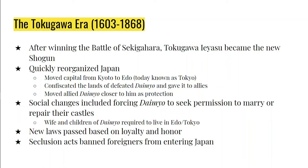Another law passed by the Tokugawa was a national policy of seclusion, starting in 1630, which banned foreigners — specifically the Portuguese — from visiting Japan. The Chinese and Dutch were still allowed in certain limited ways, but for the most part all outside visiting to Japan became strictly forbidden. Even Japanese who left the country and tried to come back were subject to the death penalty. This seclusion act remained in force until 1854.